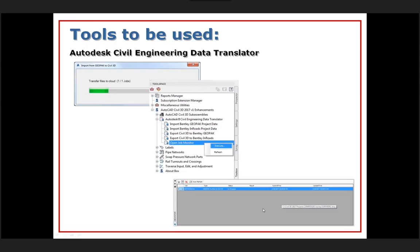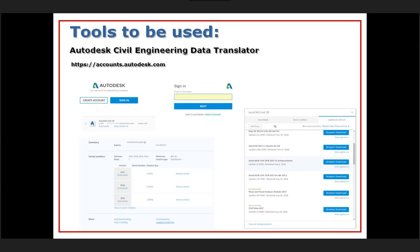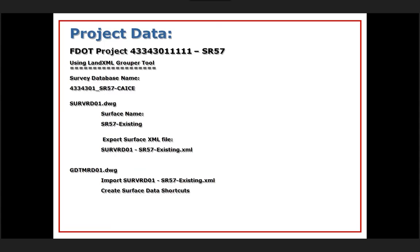Once the data has been pushed to the cloud, you have to open up the Job Monitor tool and wait for the translation to finish. When it's done, the status changes from 'in progress' to 'complete,' and then you pick Download. To get this tool, the CAD manager who manages your subscription account with Autodesk would log into that account, go to the Civil 3D section, expand it, go to the updates and add-ons link, find the tool, download it, and install it - and that's how it shows up inside Civil 3D.